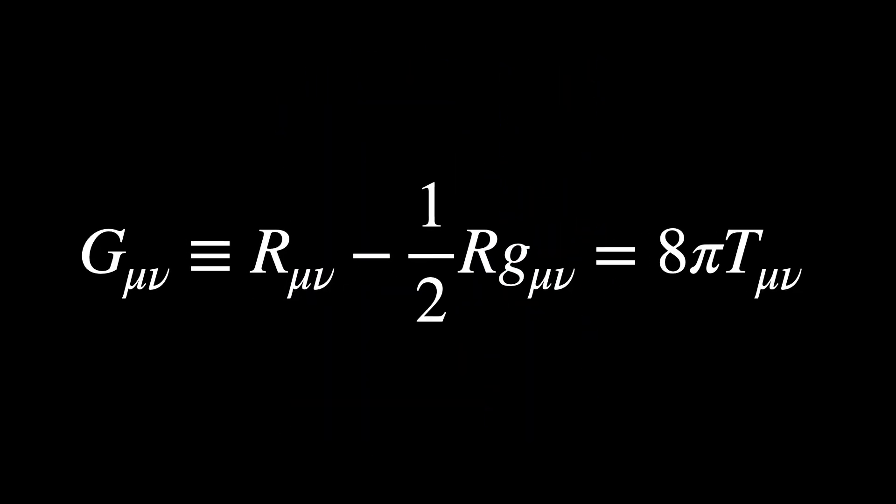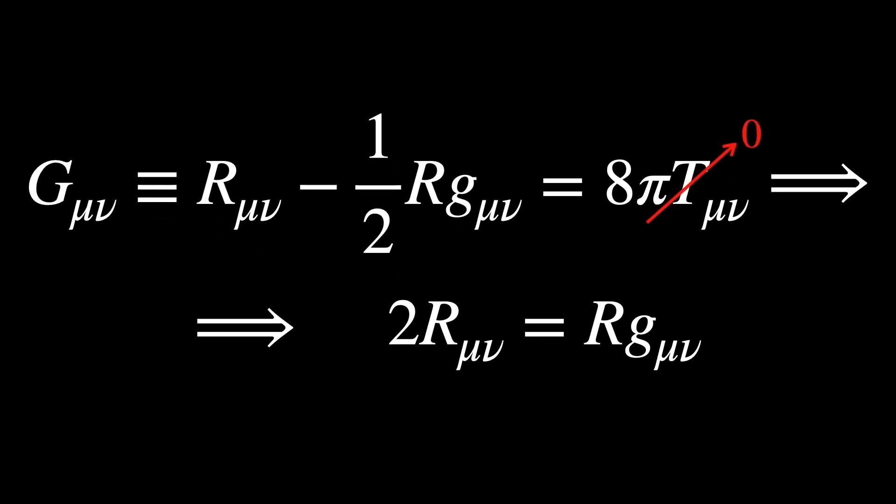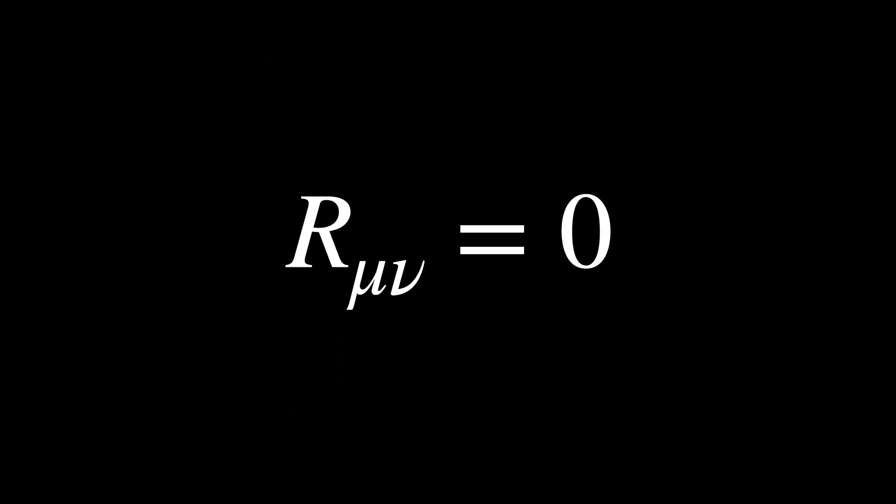The energy momentum tensor T_μν is zero everywhere. This condition simplifies the Einstein field equations a lot. In terms of differential geometry, we say that space-time is Ricci flat.